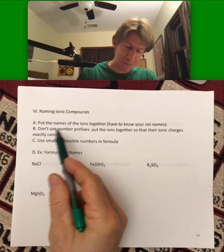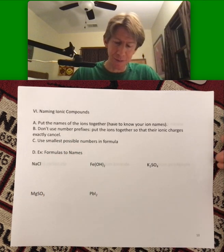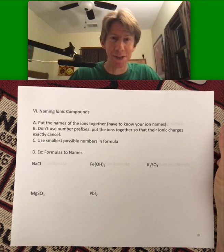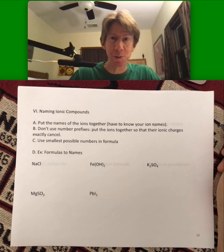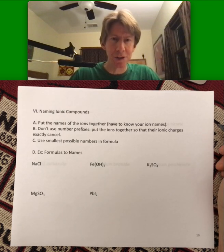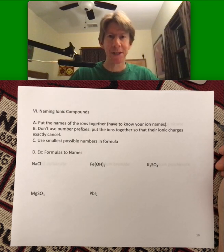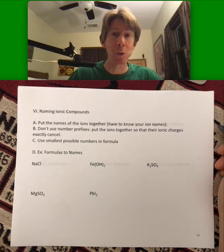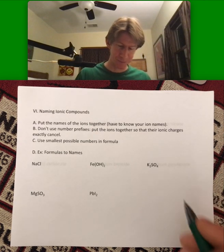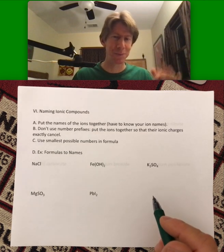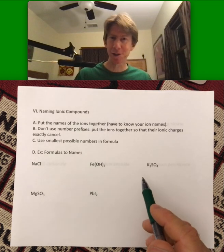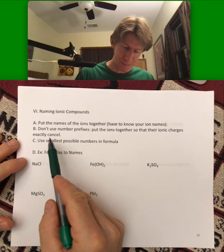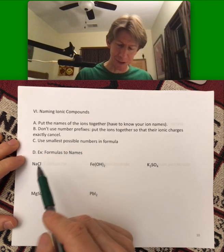As far as naming, you're going to put the names of the ions together. That's pretty much how you do ionic compounds. And just to be clear, there's no number prefixes. In the next lecture video, we will use number prefixes, so just want to be clear about that. And you will use the smallest possible numbers in the formula.